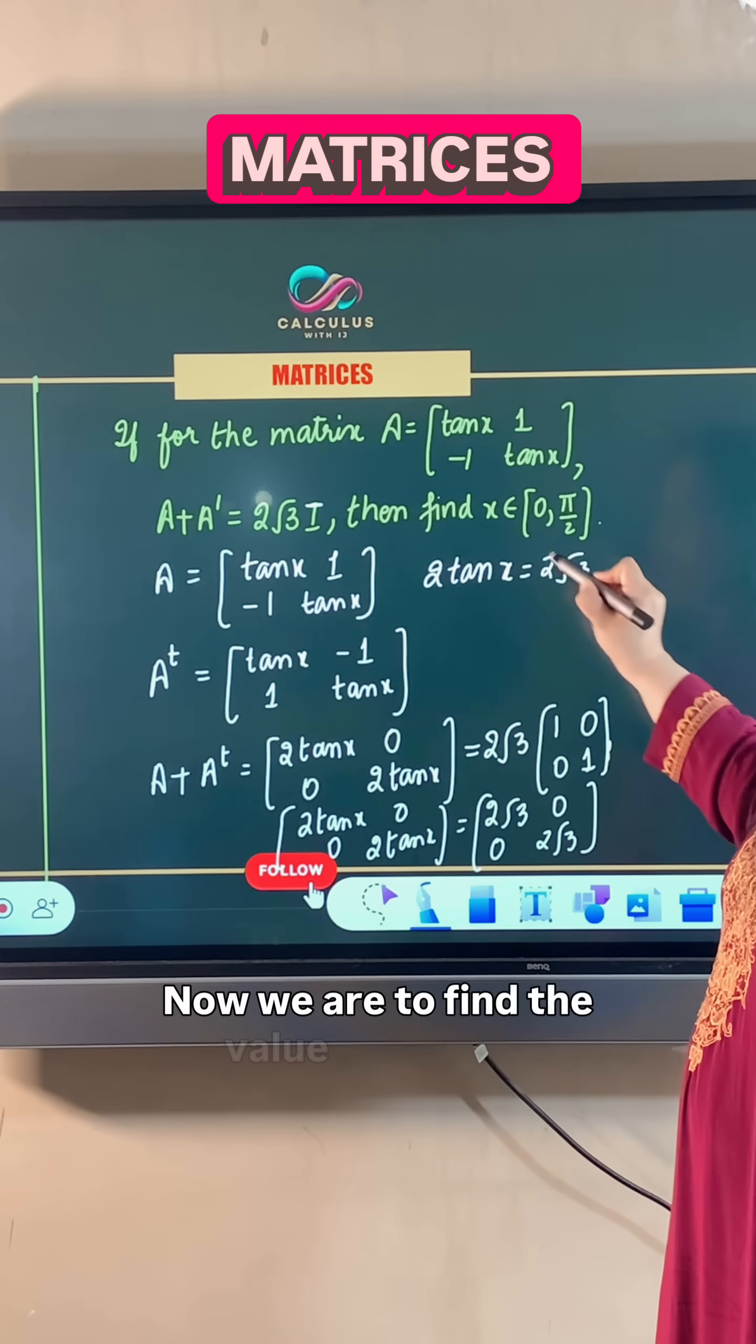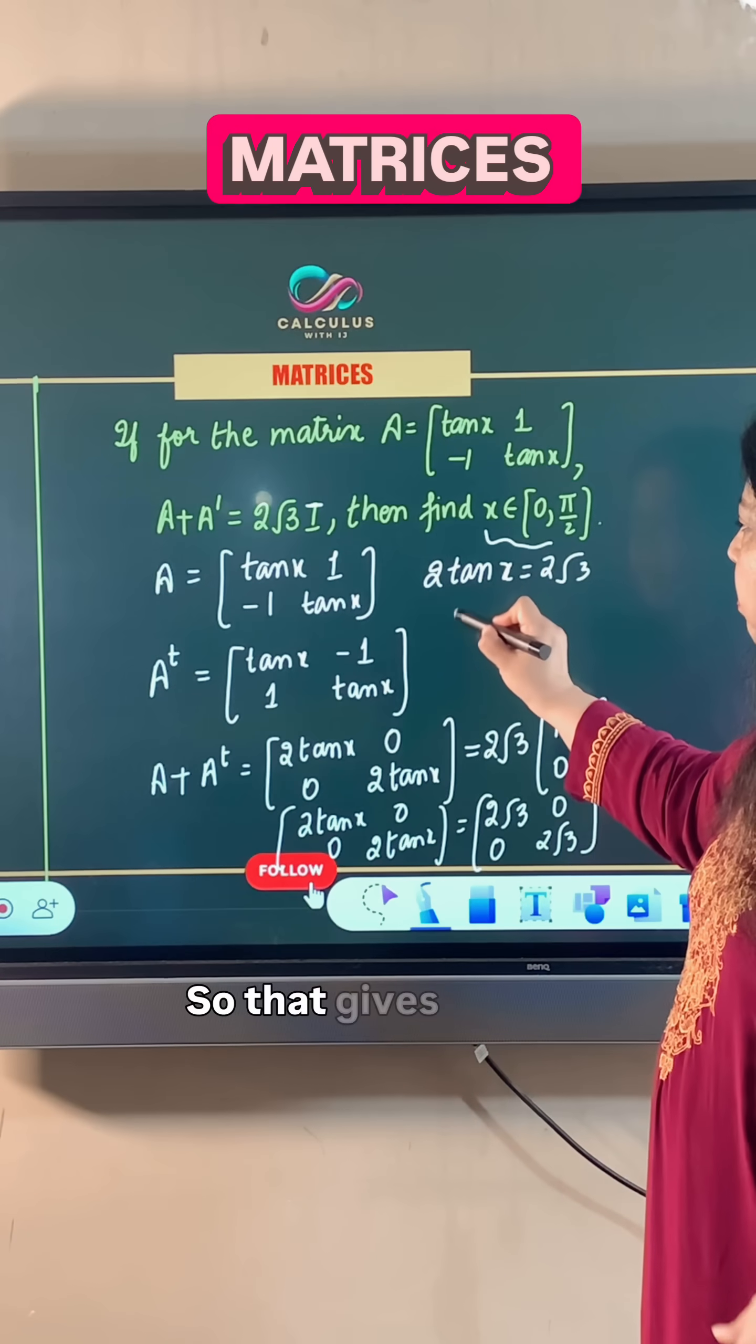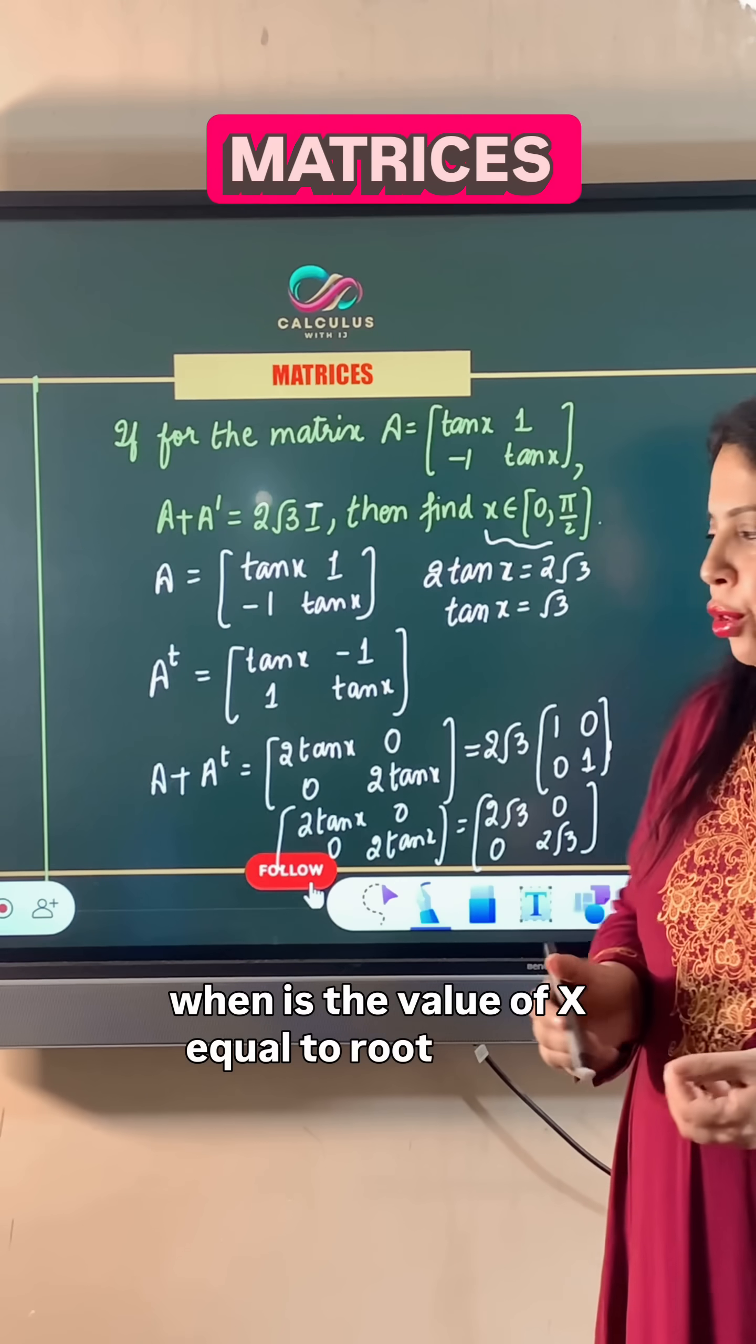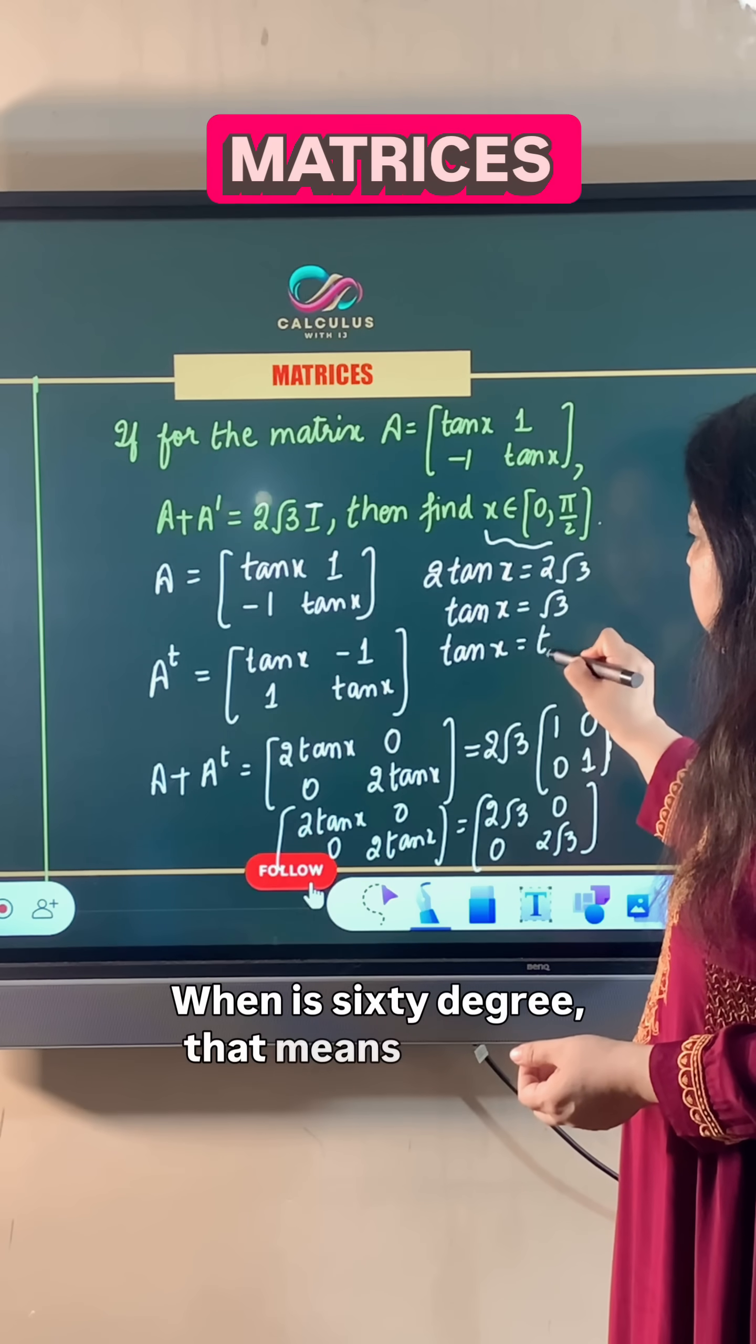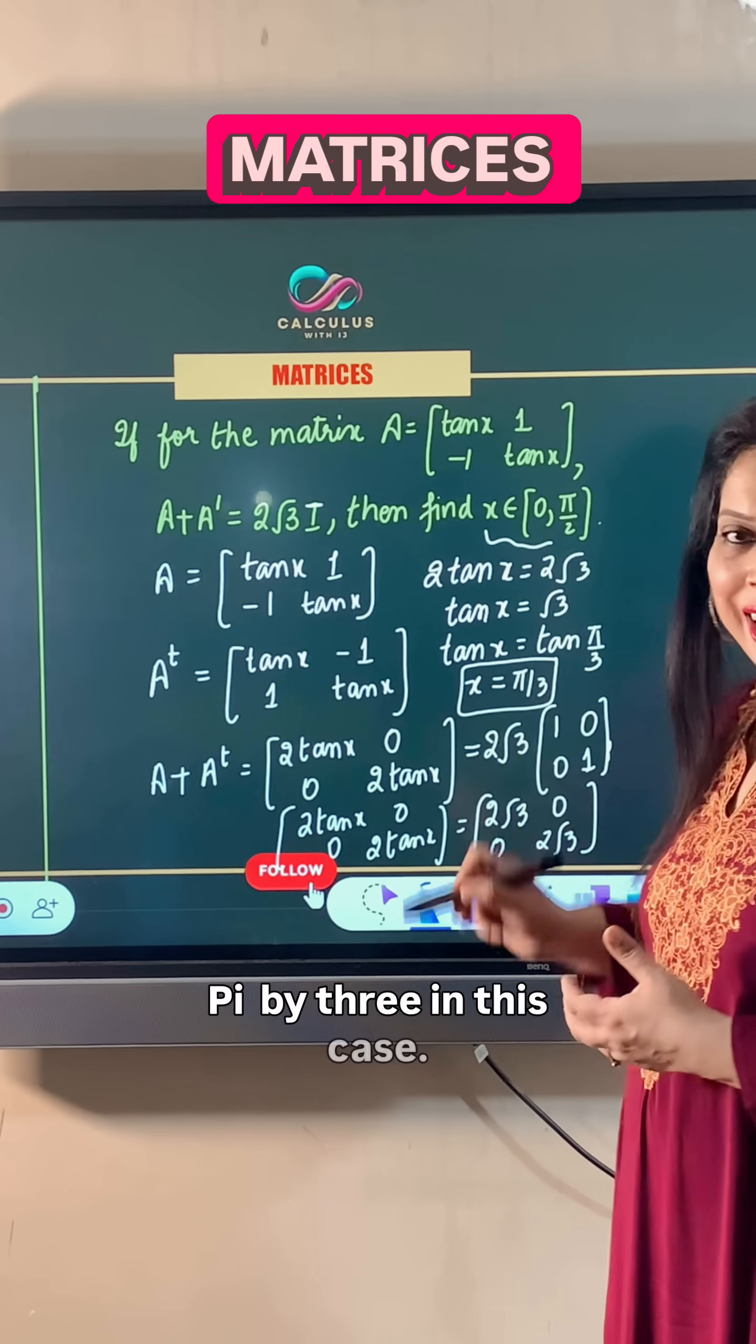Now we have to find the value of x in the closed interval 0 to pi by 2. That gives us tan x is equal to root 3. When is the value of tan x equal to root 3? When tan is 60 degrees, that means tan pi by 3 equals root 3. So the value of x is pi by 3.